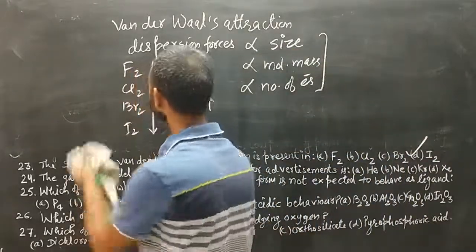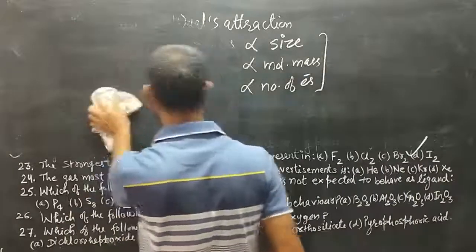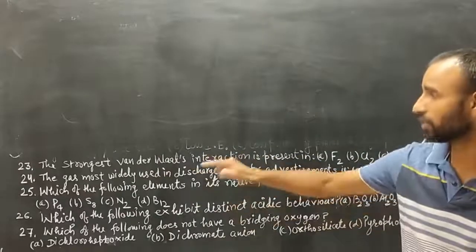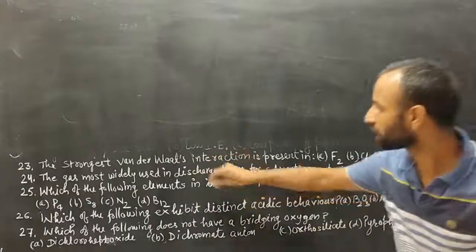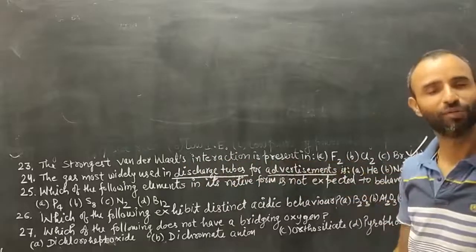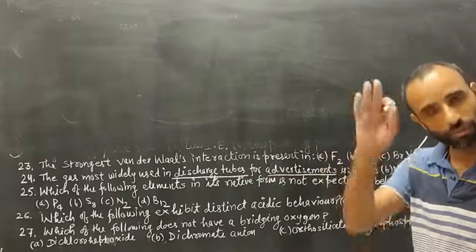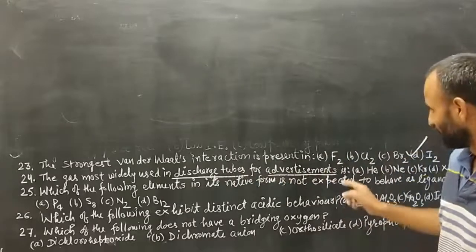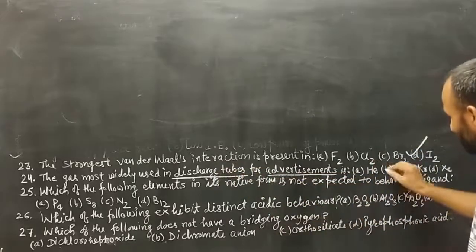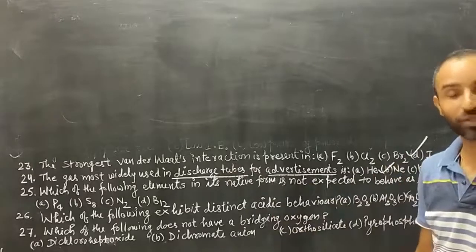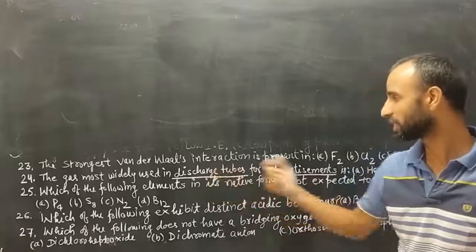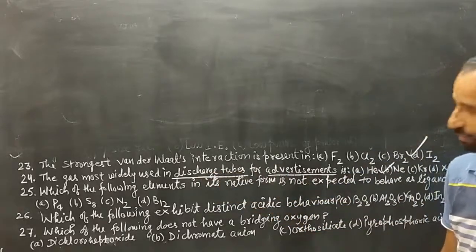Question 24: the gas most widely used in discharge tubes for advertisement. This is a very common question asked in many exams. The answer is neon — neon bulbs. Neon is used in discharge tubes for advertisement.